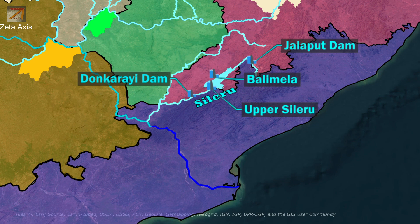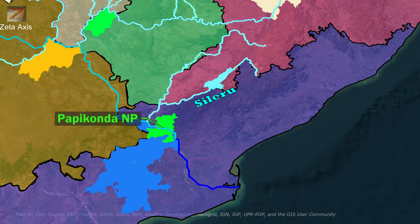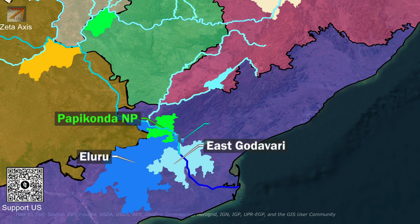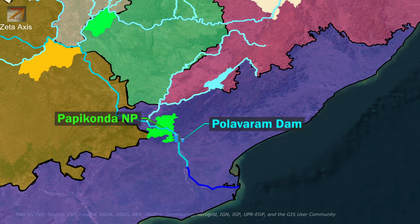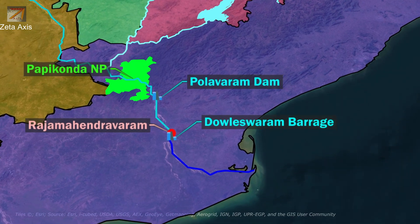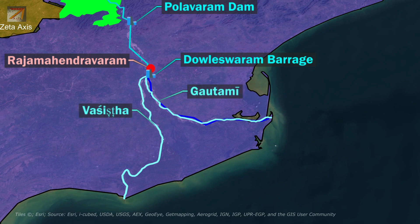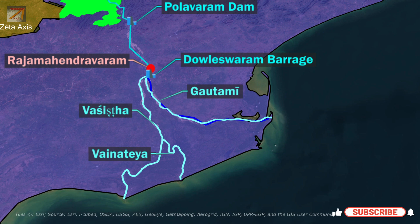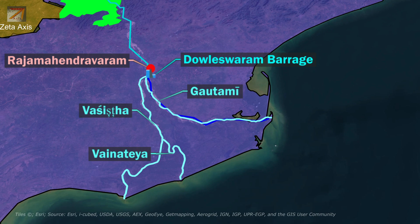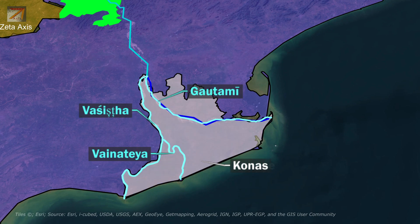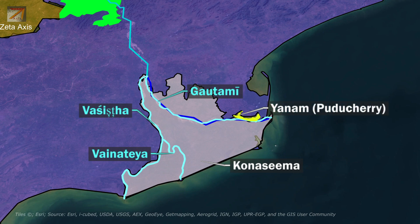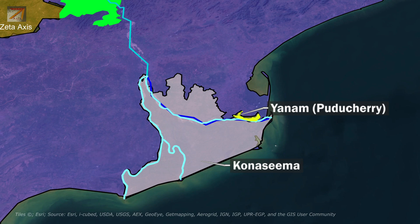After the confluence of Godavari and Sileru, the river passes through Papikonda National Park in the Eastern Ghats. Within Eluru district and East Godavari district in Andhra Pradesh, the Polavaram project is under construction on Godavari River. Further downstream, Dowaleswaram Barrage has been constructed across the Godavari in Rajamahendravaram. After Rajamahendravaram, the Godavari splits into several branches; two large branches are Gautami Godavari and Vasishtha Godavari. Vasishtha Godavari further splits into Vasishtha and Vainateya branches. These different branches form the Godavari Delta, which is around 170 km long in Konaseema district of Andhra Pradesh. The Gautami Godavari is the largest branch and passes through the Yanam enclave of the Union Territory of Puducherry, emptying into the sea at Point Godavari.